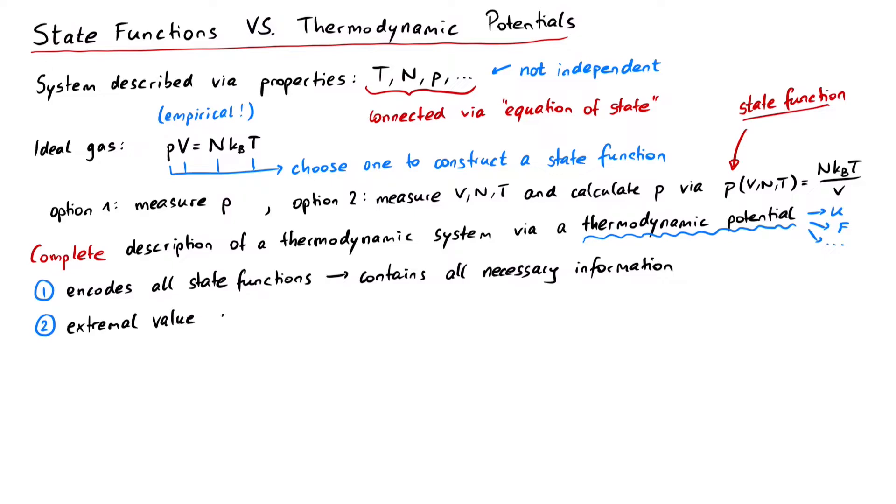The thermodynamic equilibrium is described if a thermodynamic potential takes on an extremal value, which is not always necessarily the minimum. For instance, a closed system is in thermodynamic equilibrium as soon as its entropy has reached its greatest value.